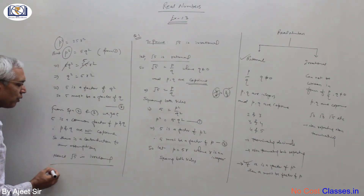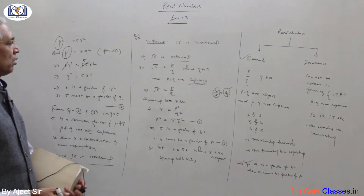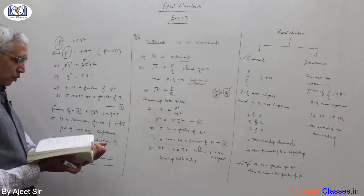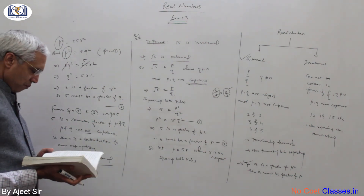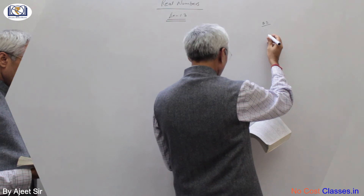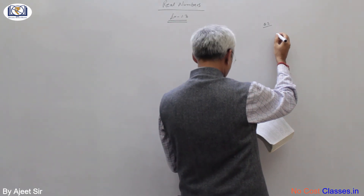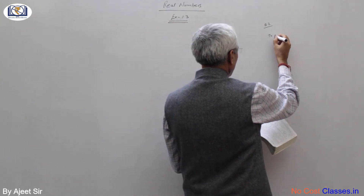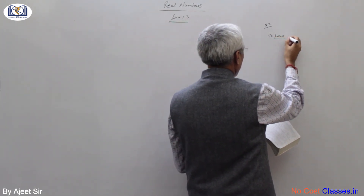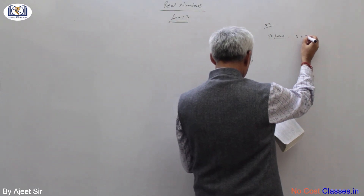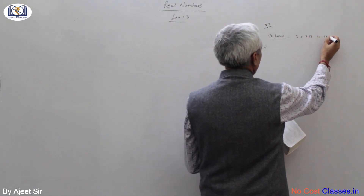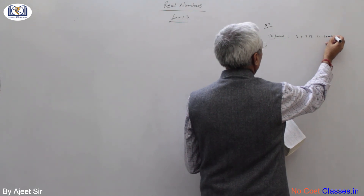This is the way you have to perform the solution for question number one. Now for question number two: prove that 3 plus 2 root 5 is irrational.